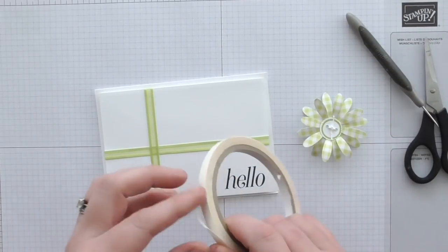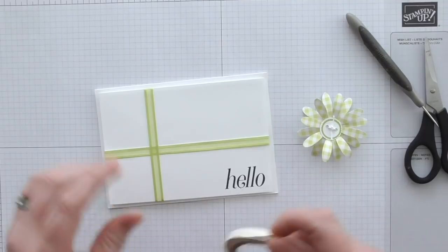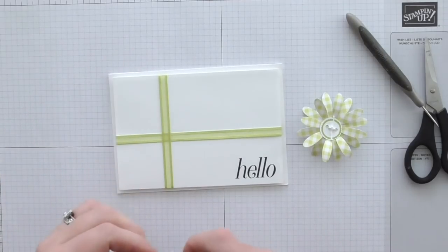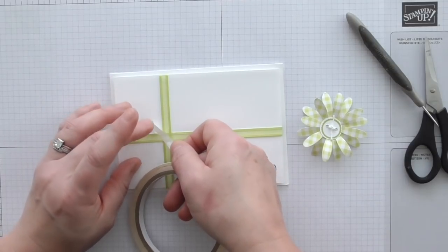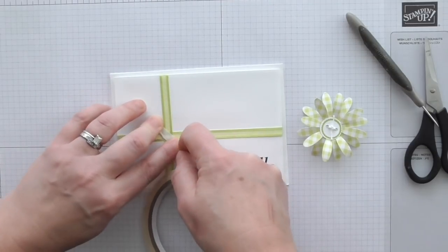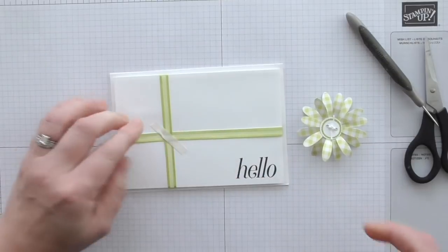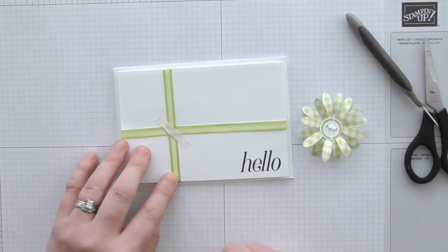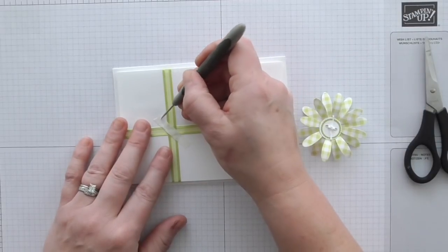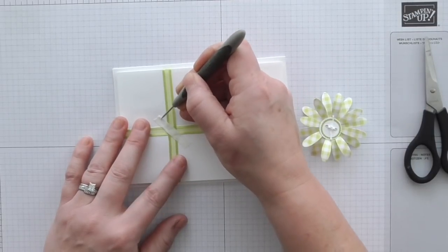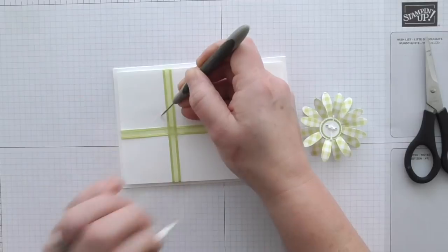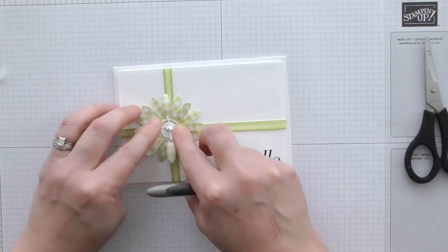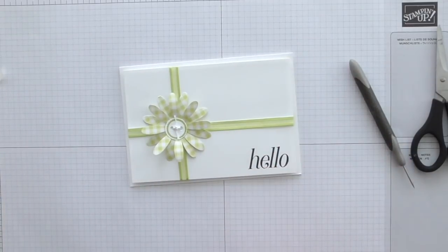So then what I'm going to do is, I'm going to get some tear tape. Now this is a good way to adhere this. Because we've got the organdy ribbon there and it's loose. I'm just going to attach some of the tear tape at an angle across the middle there and that will hold down that organdy ribbon so that it doesn't shift about. And it will also house our flower. So get it on central. Give it a press.